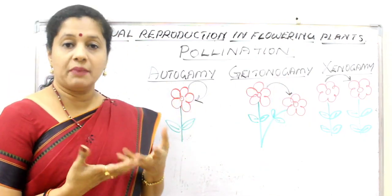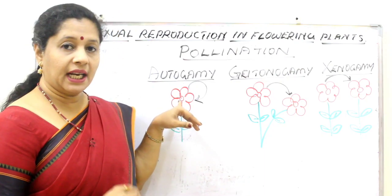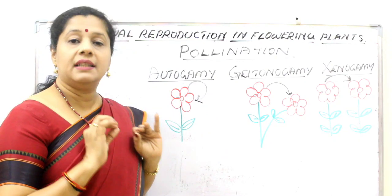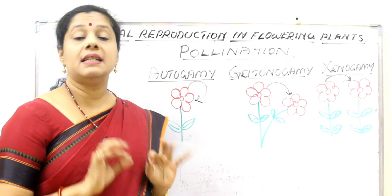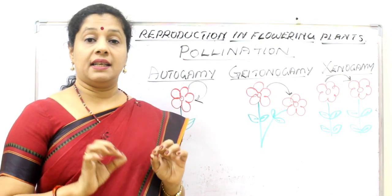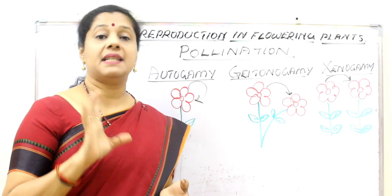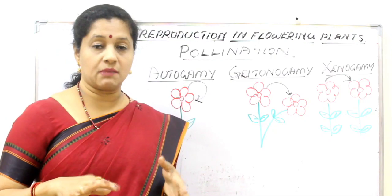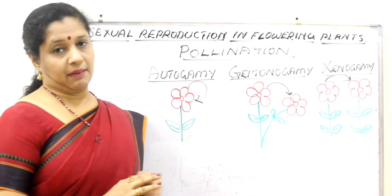Autogamy: 'auto' means self. If the pollen grain of a flower falls on the stigma of the same flower, it is called autogamy — or strictly self-pollination. Which plants can have this? Only bisexual flowers. If it is a unisexual flower, this is not possible. Only bisexual flowers can carry out autogamy.